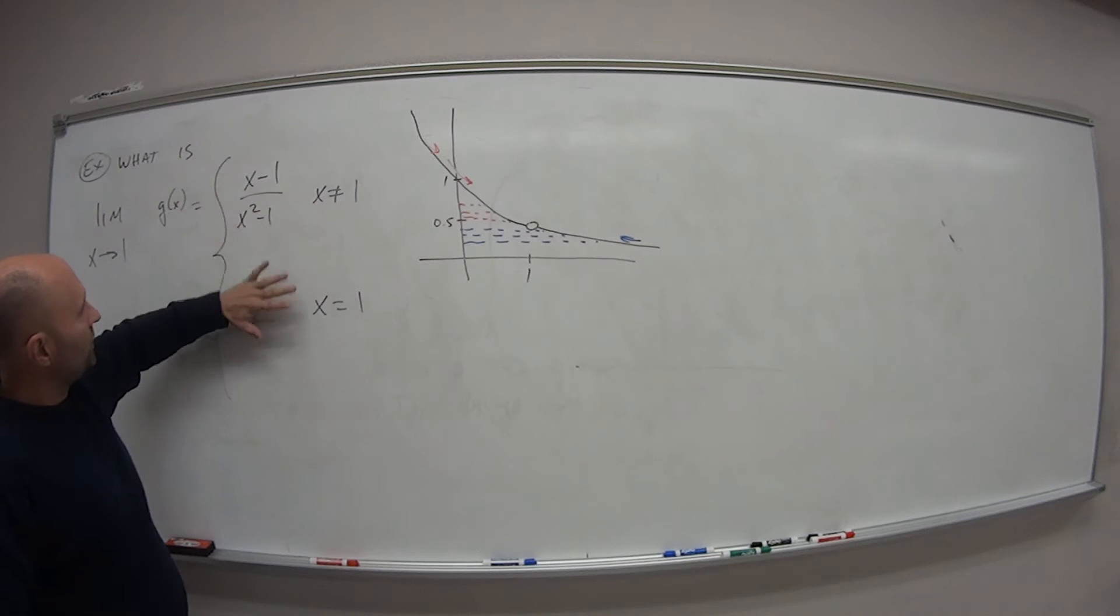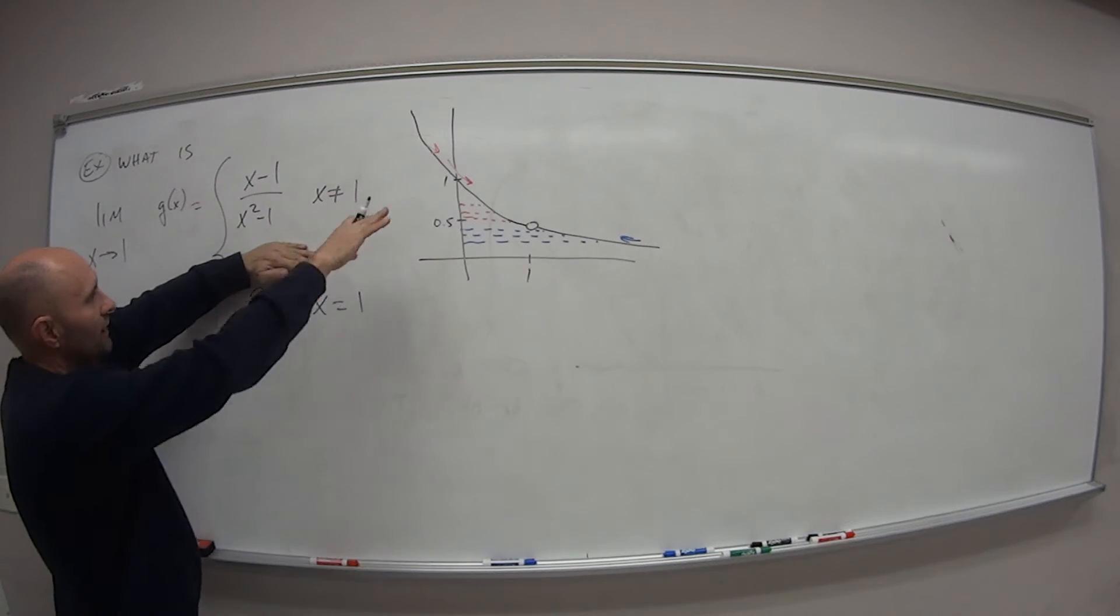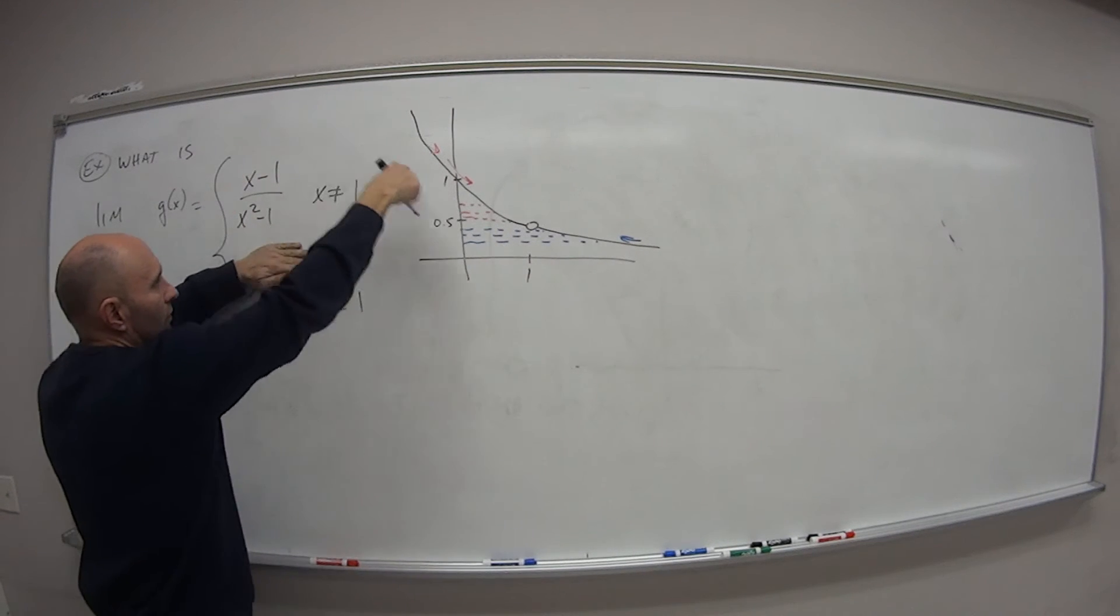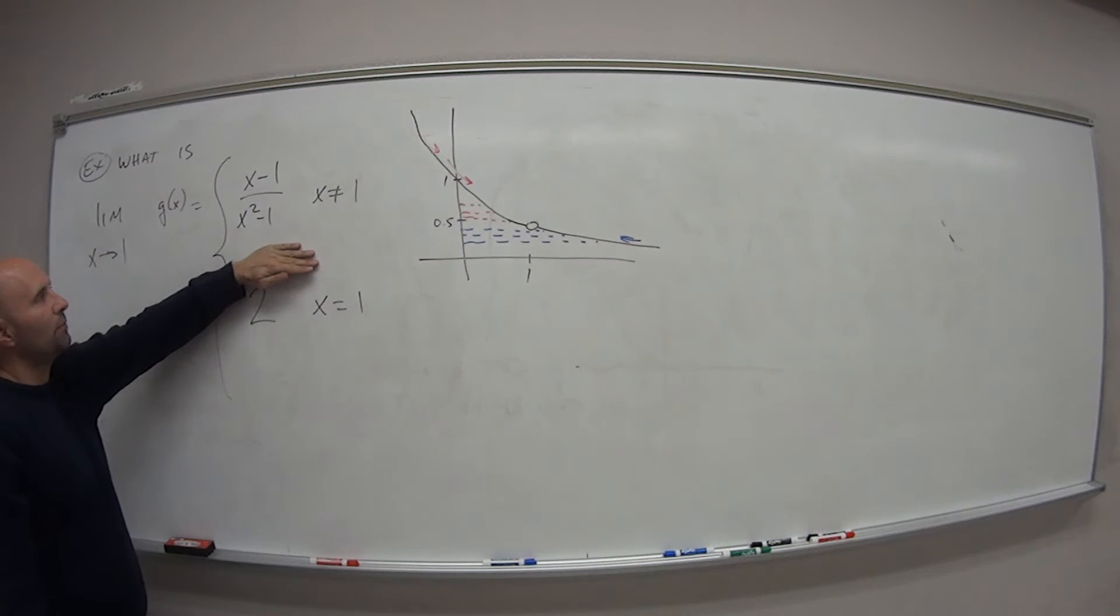So if we were to graph this, what does this look like? Well obviously, and that's why I left this graph on here, this first part is the graph that we had from the last example.